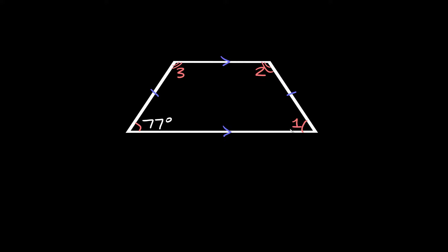So if we're trying to solve for angle one, we know it's going to be equal to this acute angle which is 77 degrees. There's our first angle.